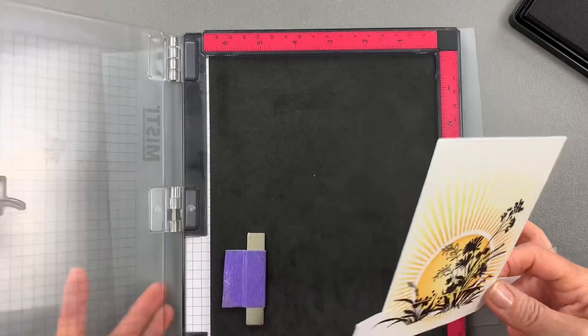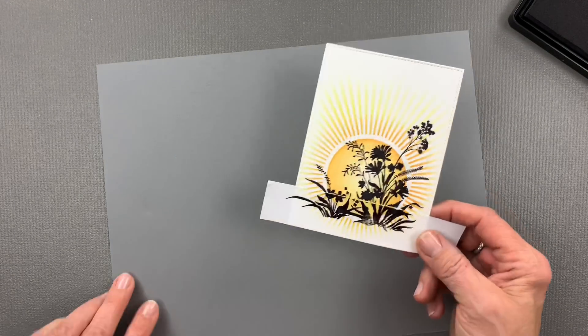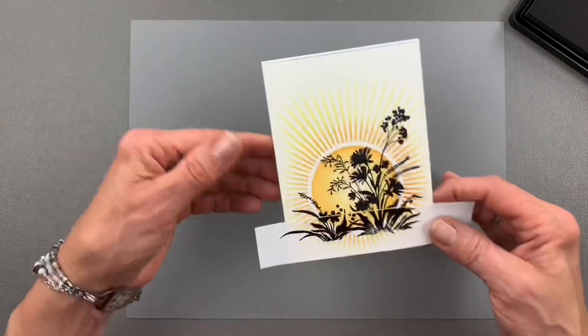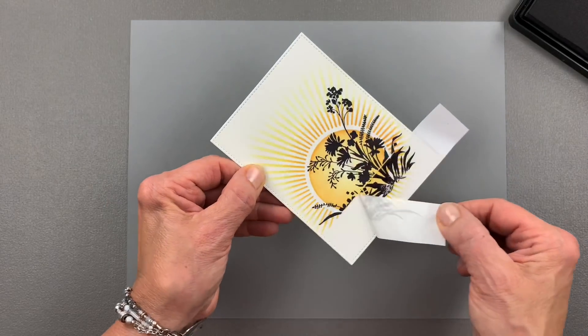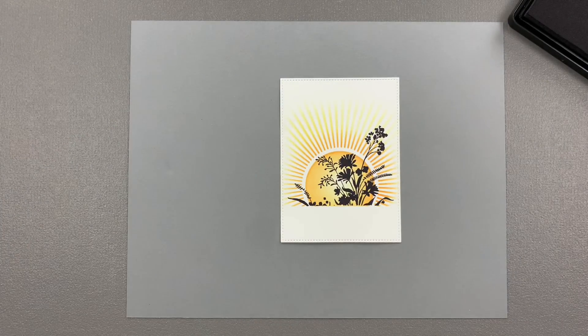So now that that is done, I'm going to peel this Masking Magic off. And you can see I've got a nice border there.